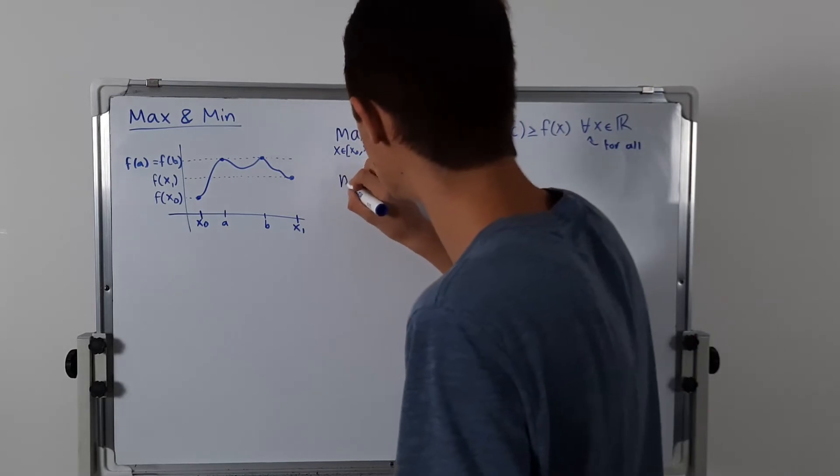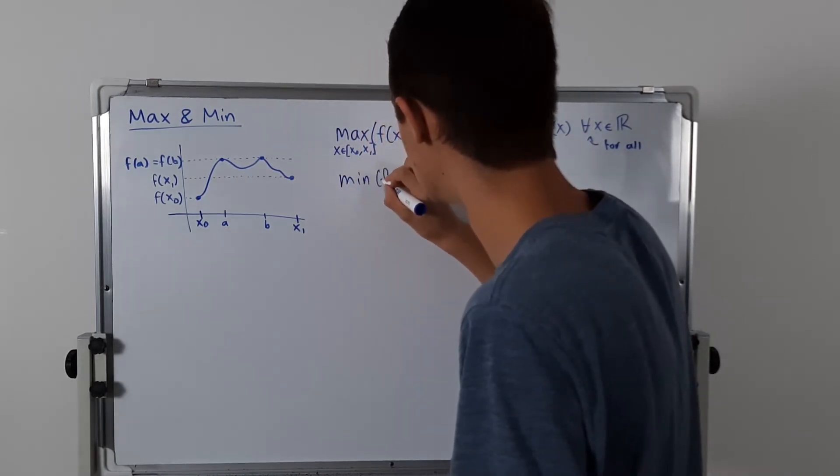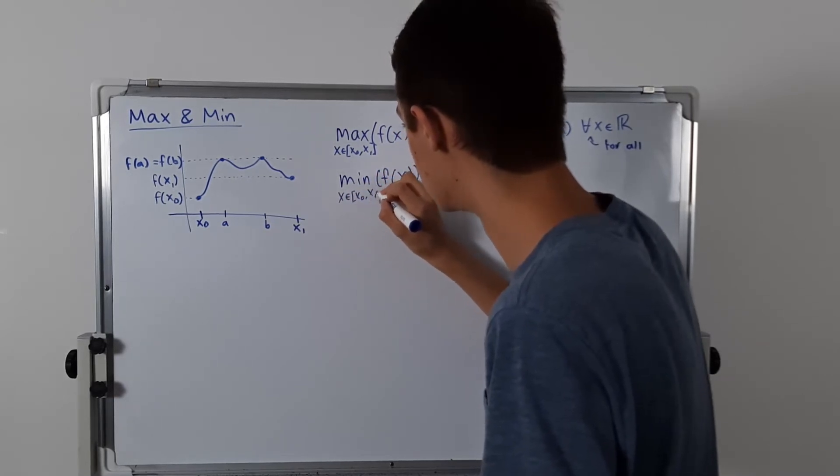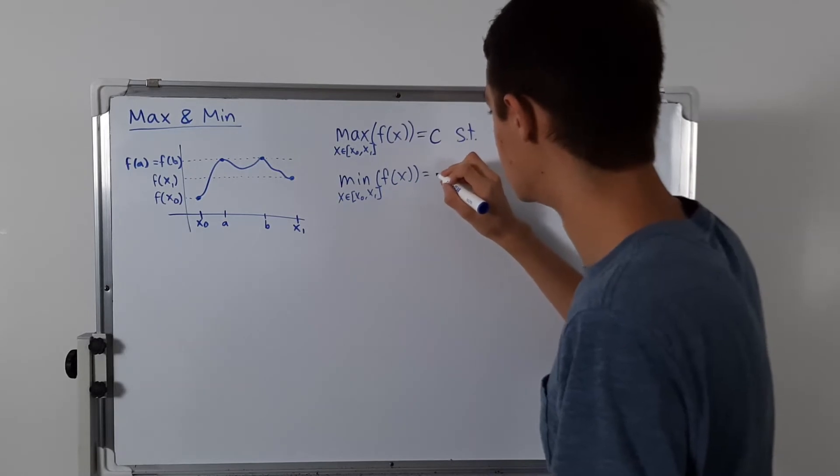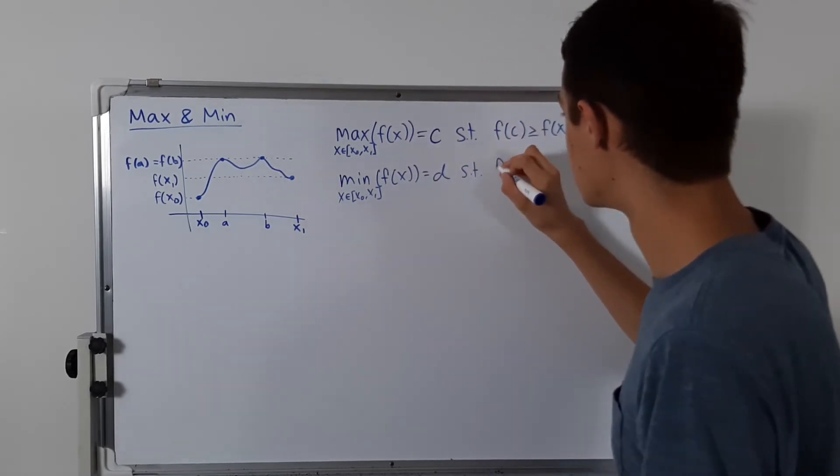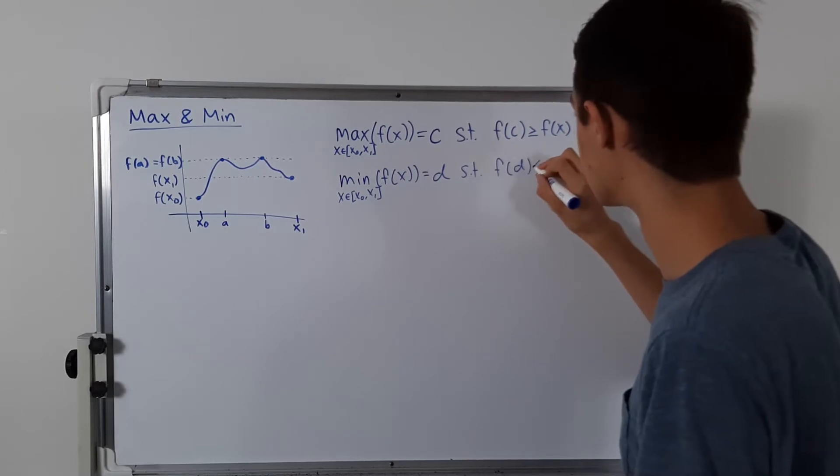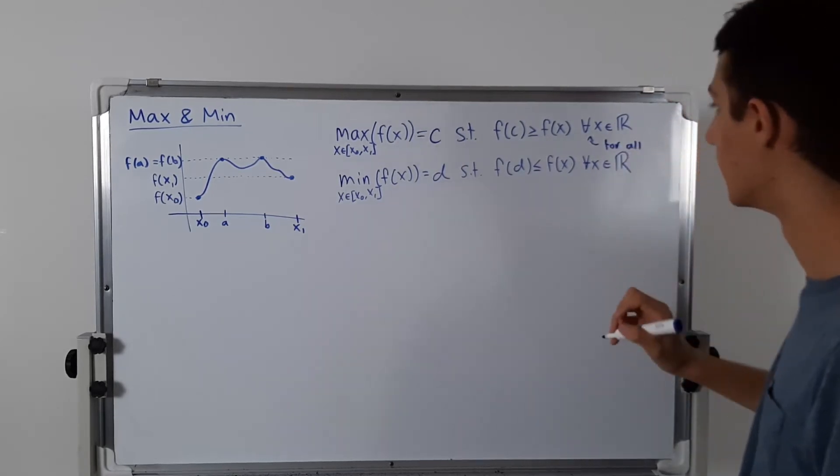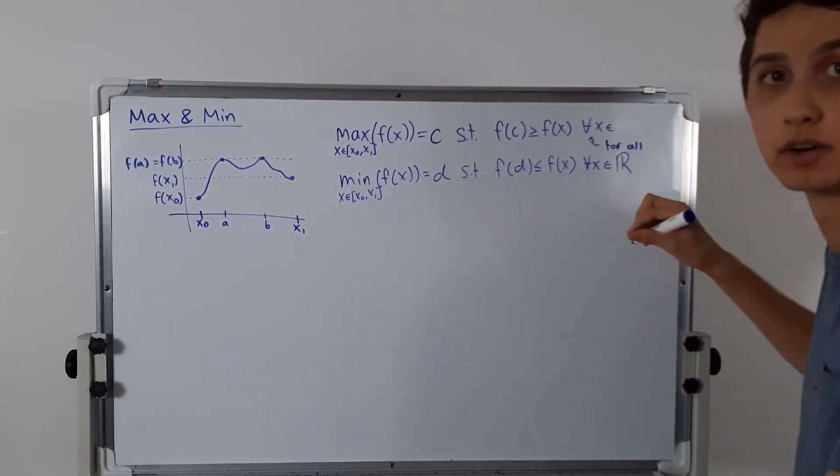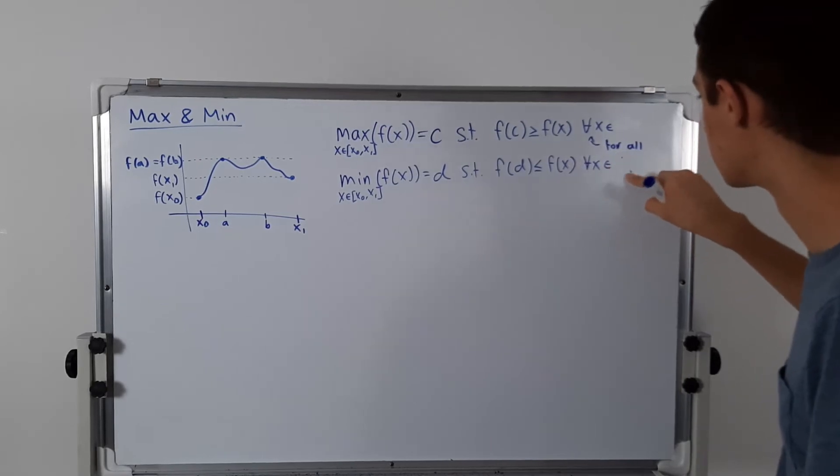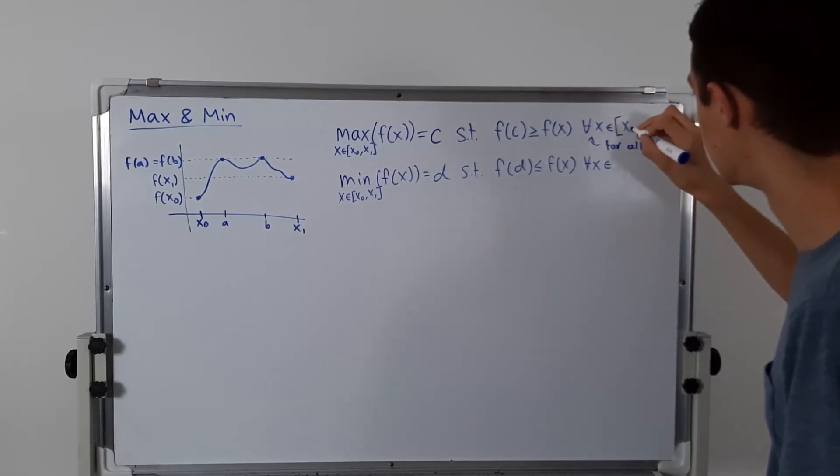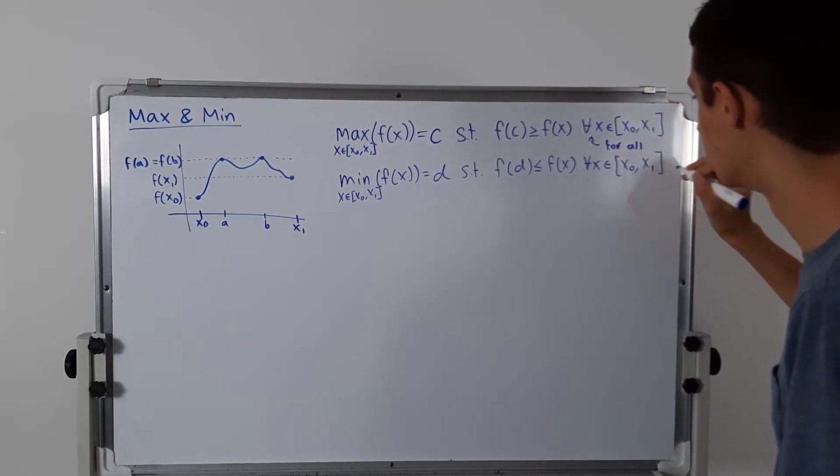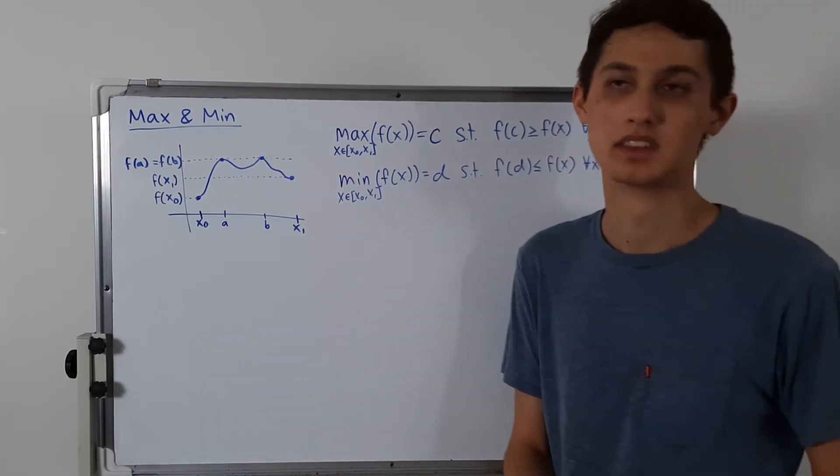And the minimum is similarly defined. So minimum of f of x on that interval. So again, we specify the interval from x0 to x1, and I'm going to call that equal to d, such that f of d is less than or equal to f of x for all x in the real numbers. Actually, no, not the real numbers. It is just whatever interval we're working with. So it could be the real numbers, but let's stay abstract. Actually, if we wanted to be totally abstract, we would just use any set, but let's just stick to intervals, because that's the easiest to think about.